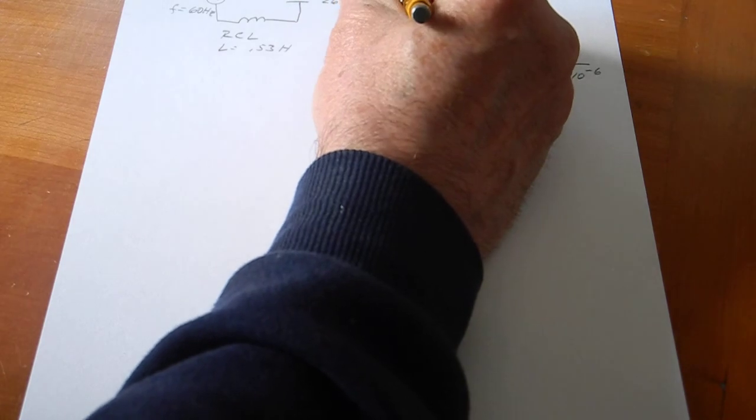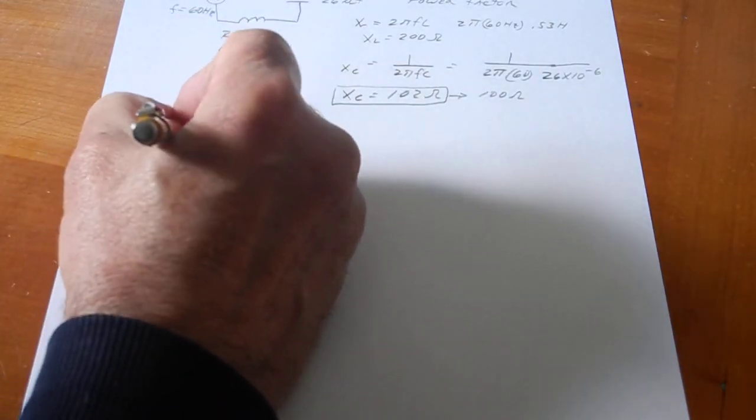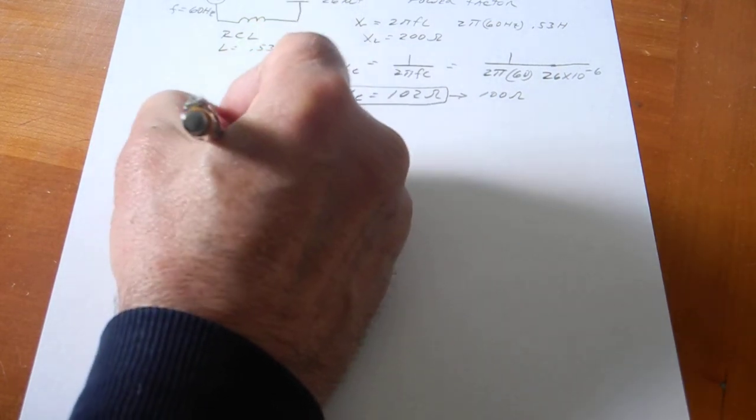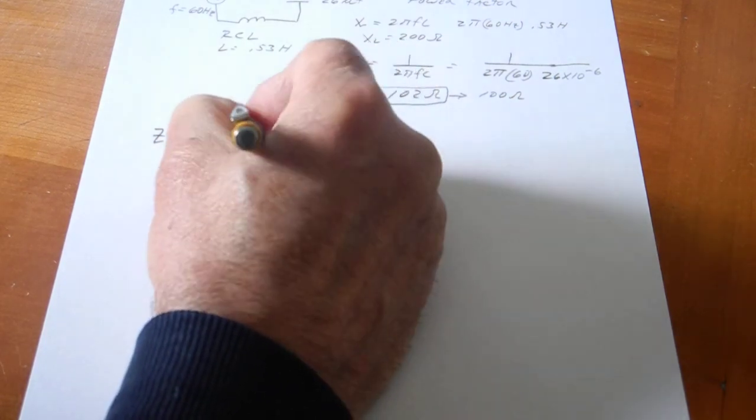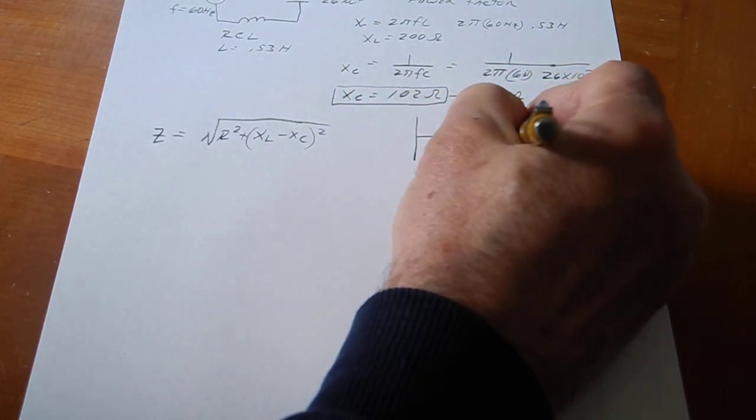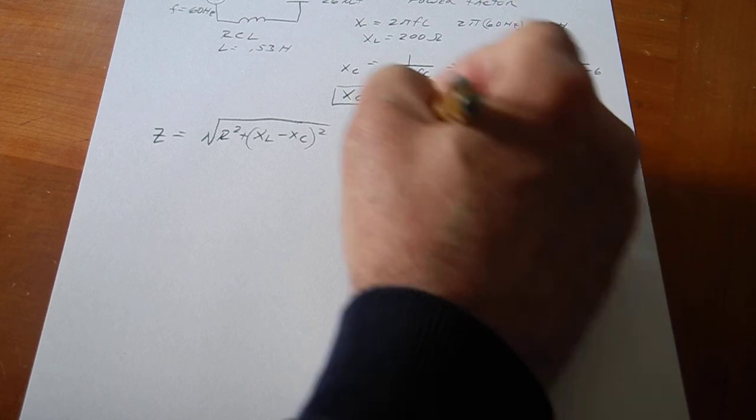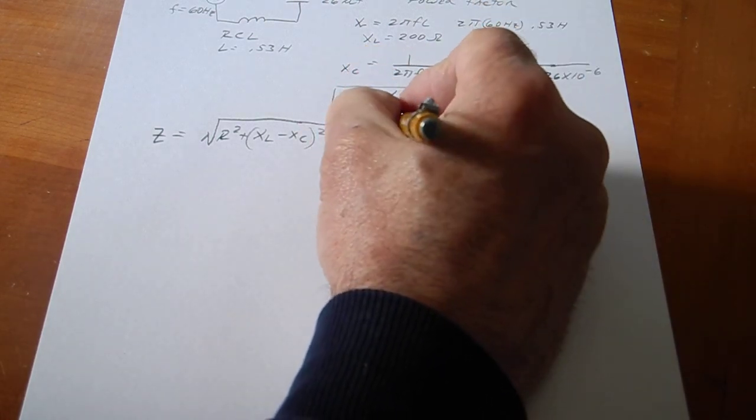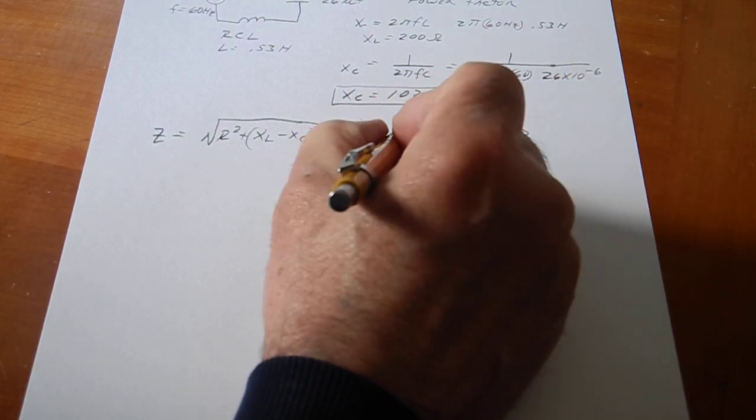So, we found X of L, we found X of C. And now, Z is the square root of R squared plus X of L minus X of C quantity squared. If you look at the vector diagram, we have R is 100 ohms this way. We have X of L is 200 this way. And X of C is 100 this way.